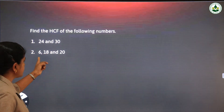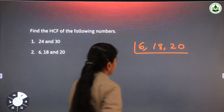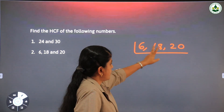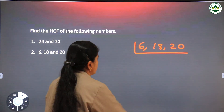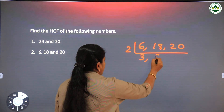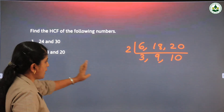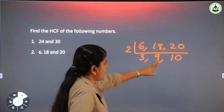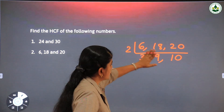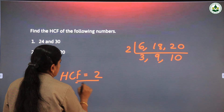Next, find the HCF of 6, 18, and 20. Write down the numbers: 6, 18, and 20. All are even numbers, so divide by 2: 6 ÷ 2 = 3, 18 ÷ 2 = 9, 20 ÷ 2 = 10. Now 3 and 9 can be divided by 3 but 10 cannot, since 3 is not a factor of 10. Therefore stop the process. The HCF is only 2 — the HCF of 6, 18, and 20 is 2.